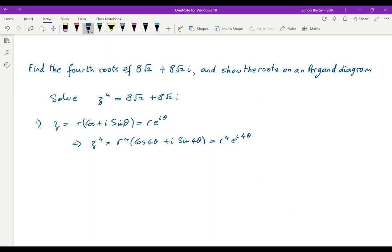Well this is now in modulus argument form so it suggests really that we should put 8√2 + 8√2i into modulus argument form. So let's look for the modulus first of all. The modulus of 8√2 + 8√2i is 8√2 times the modulus of 1 + i,